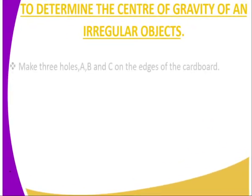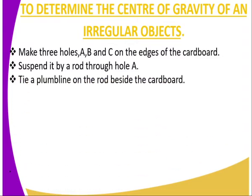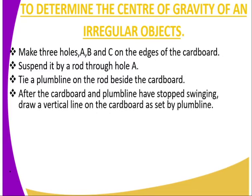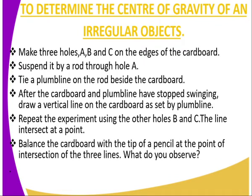What about an irregular shaped object? There is a procedure that we need to follow. Number one, we make three holes on the irregular shaped object, the lamina. Then we suspend it by a rod through hole A and we need a plumb line. We tie a plumb line on the rod side of the cardboard. And then, once they have stopped swinging, we draw a vertical line through the cardboard as set by the plumb line. We then repeat the experiment using holes B and C, and the point of intersection becomes the center of gravity. We can try to balance the cardboard using the tip of a pencil just to observe whether it balances.